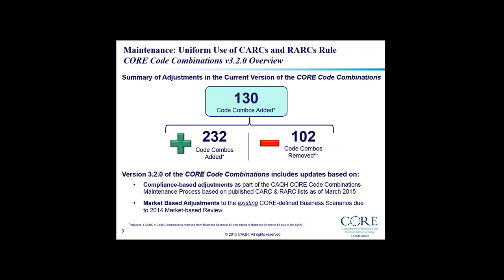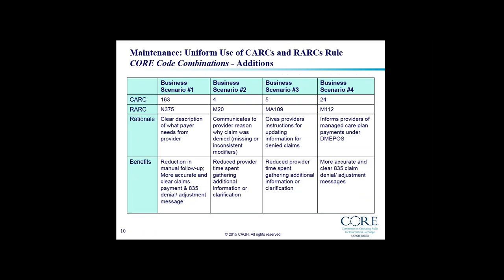Slide 9 provides a summary of adjustments included in the June 2015 CORE code combinations. Overall, between code list updates and industry submissions, the task group considered over 400 potential individual adjustments. Through extensive polling and discussion to reach consensus, the task group agreed to a set of adjustments including the addition of 232 new code combinations and the removal of 102 existing code combinations. The next couple of slides provide examples of additions, removals, and relocations approved as part of this concurrent CBR and MBR work.